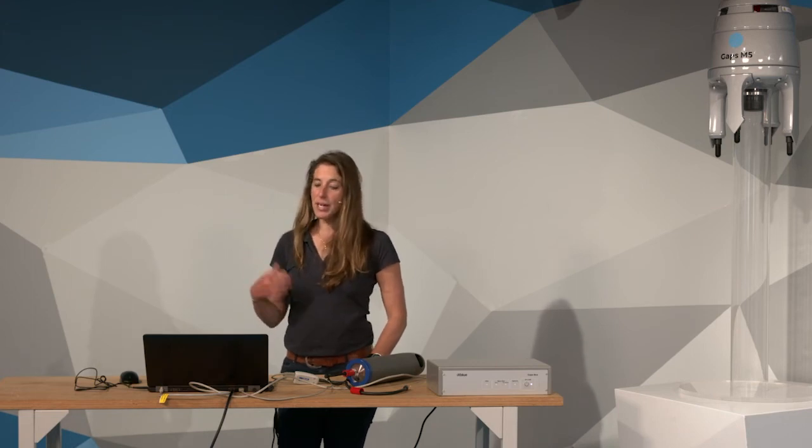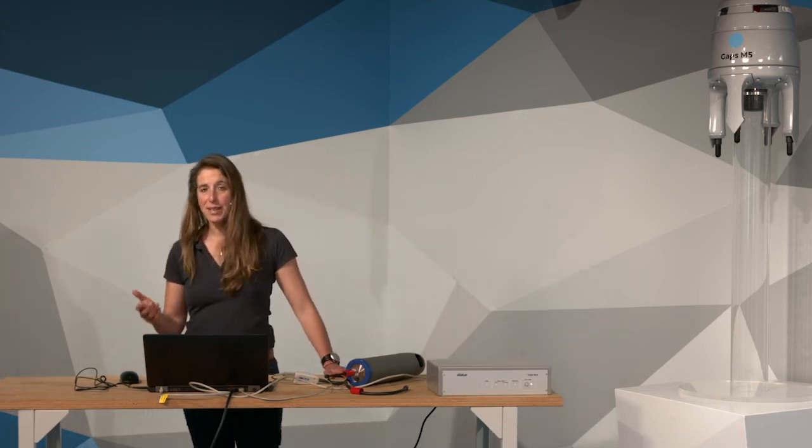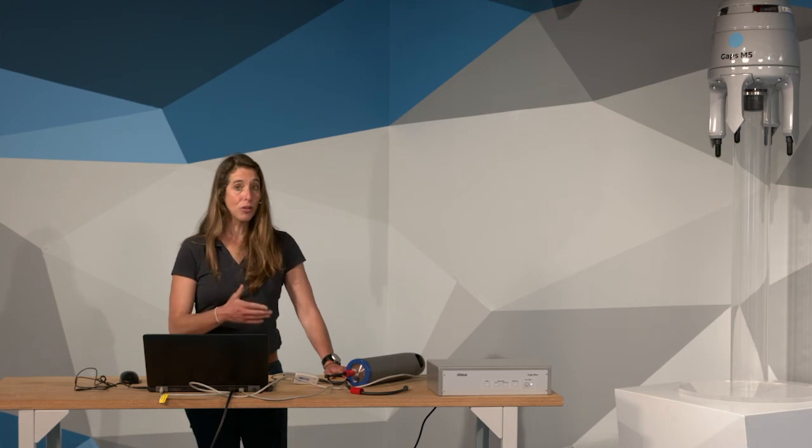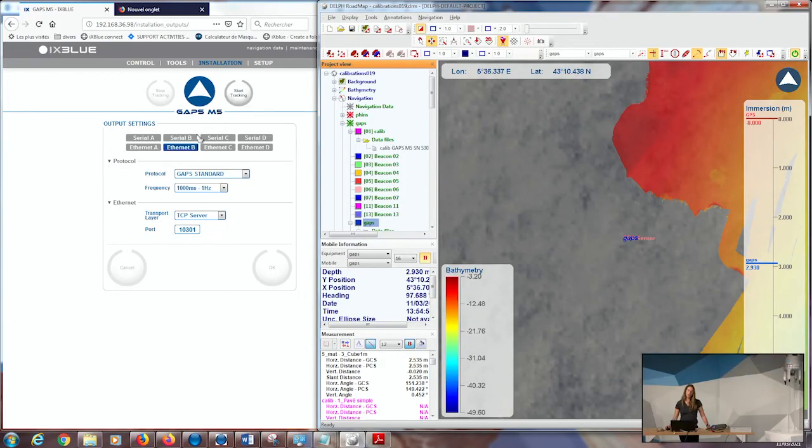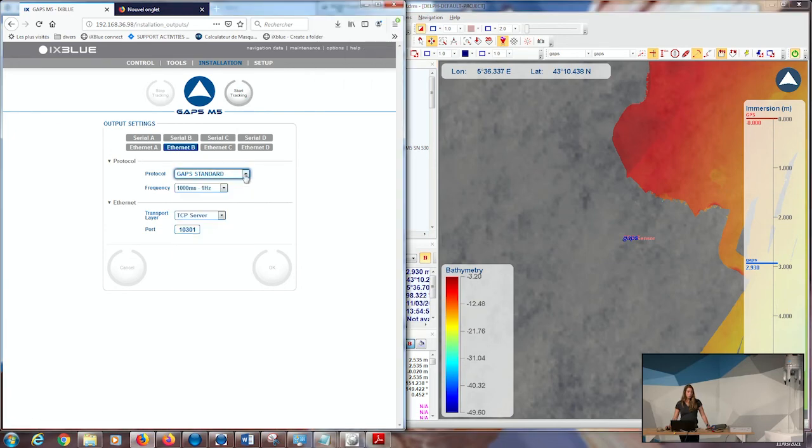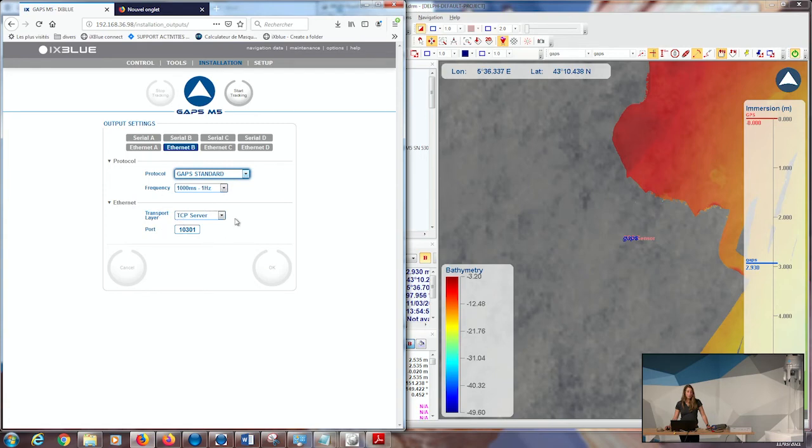Now we are doing the survey and I will show you how to interface Dell FrontMap software to the GAPS. I go in the GAPS Web MMI and on one output, I select GAPS Standard Protocol at 1Hz and a transport layer as TCP server, but you can select also UDP or serial as you want.